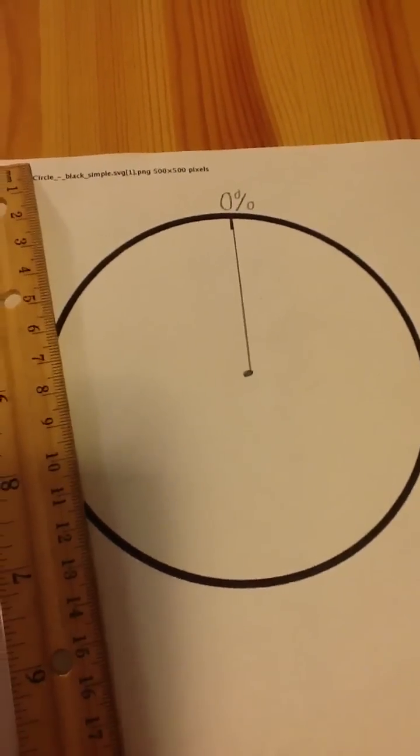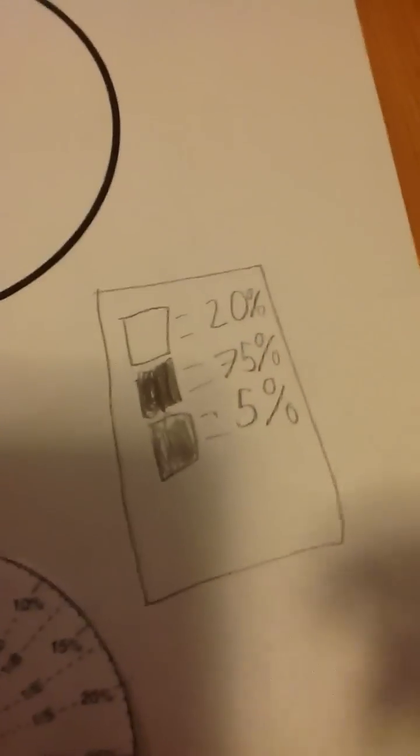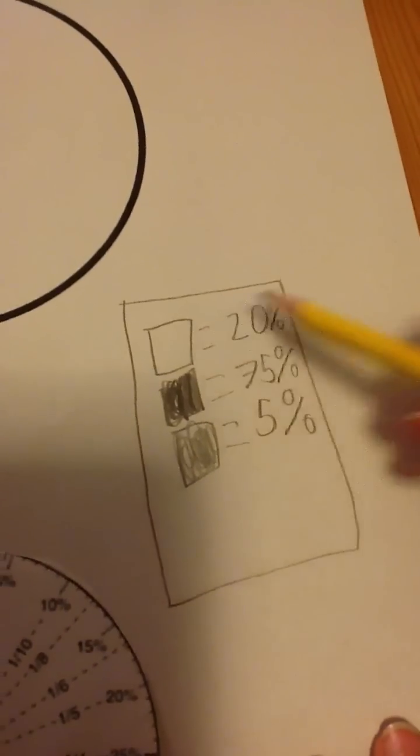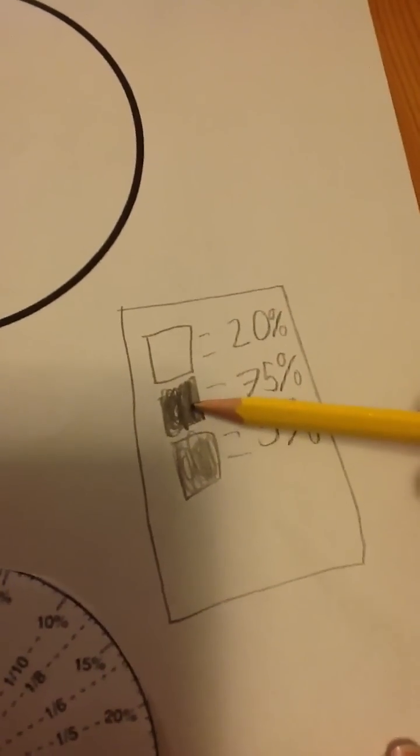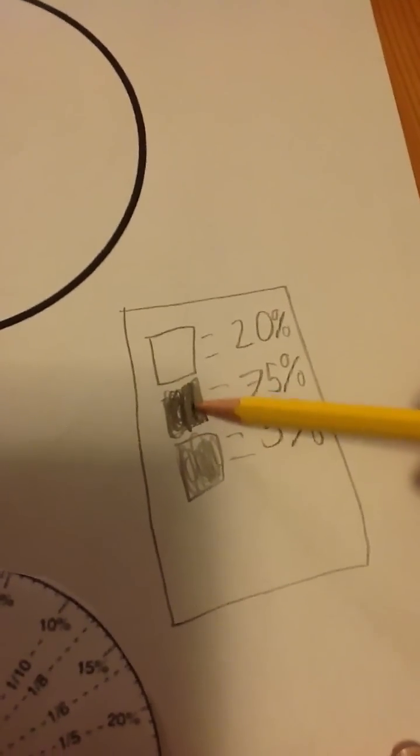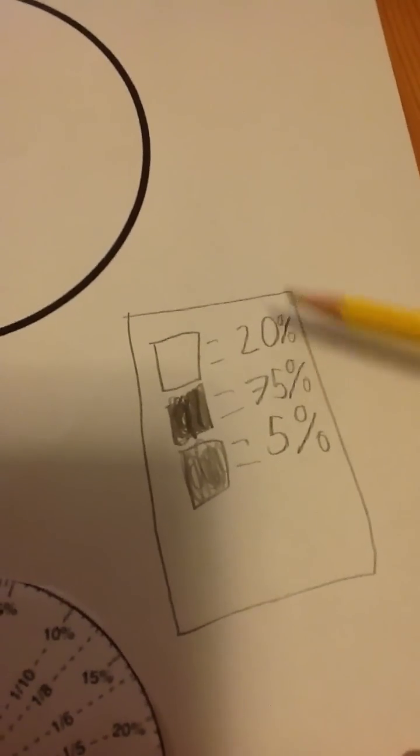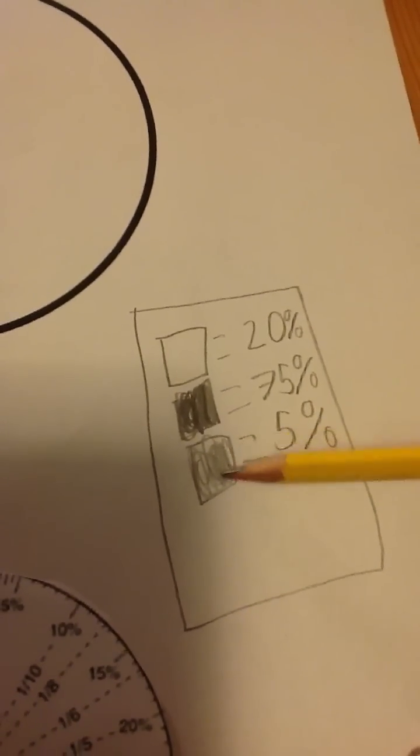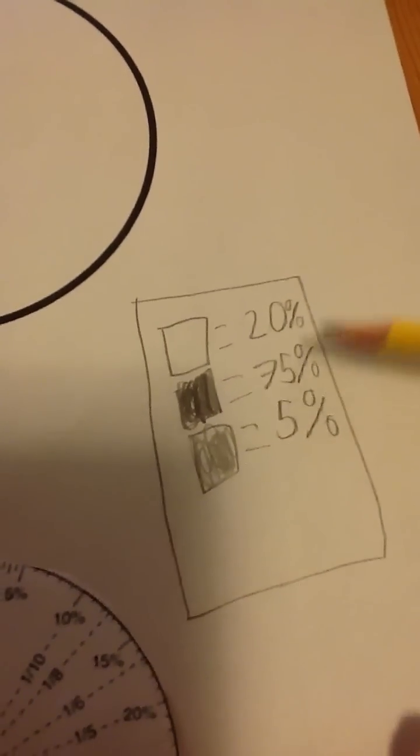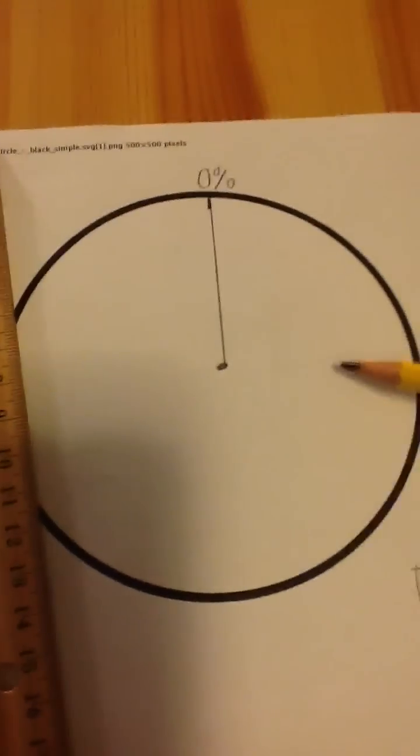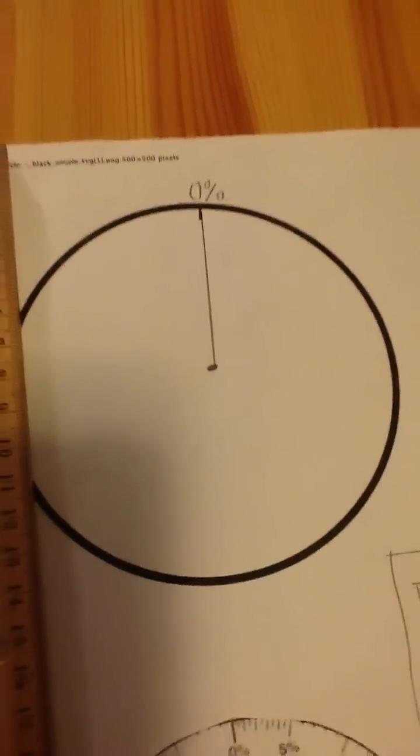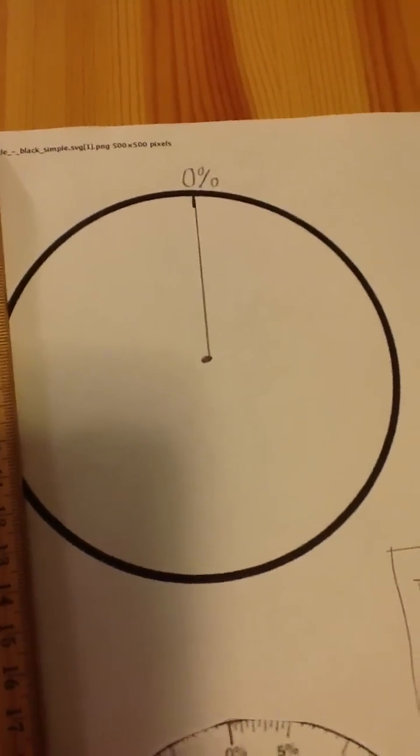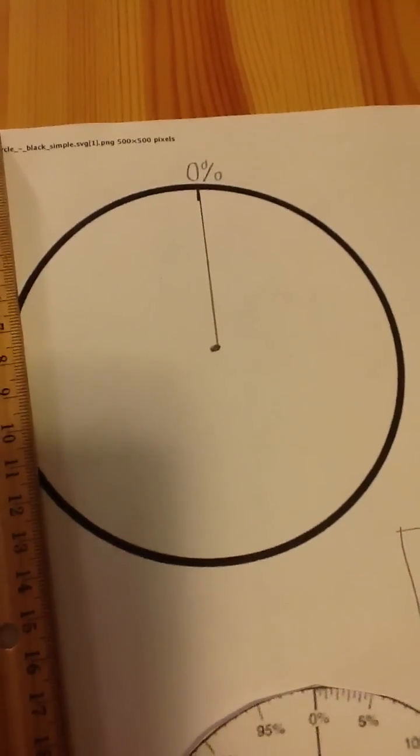Now, today in our legend, down here, we have the white is twenty percent. The black, or dark color, dark gray is seventy-five percent. And the lightish gray is five percent. Now, if we go back here, we will draw those in our pie chart.